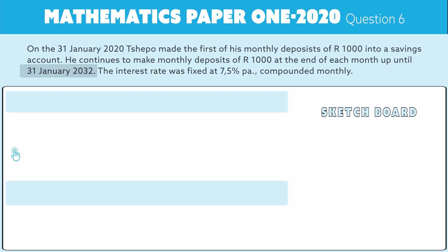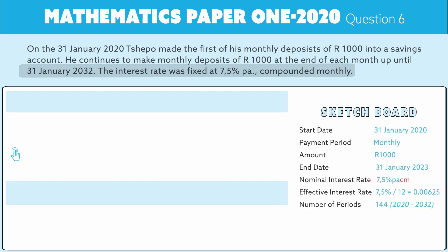The interest rate was fixed at 7.5 percent per annum, but even more important is the fact that it was compounded monthly. That is a nominal rate. We need to turn nominal rates into effective rates, and we do that per period. So if we pay weekly we want the effective weekly rate; if we pay monthly we want the effective monthly rate. That's very important — don't forget about that.